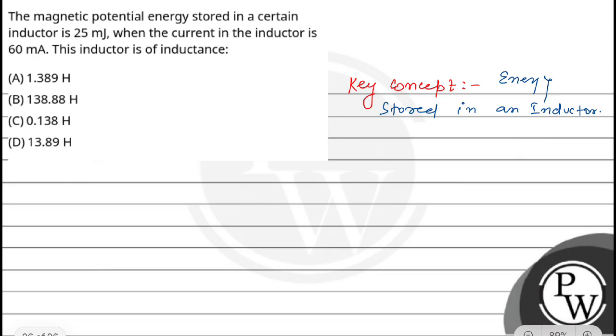We know energy is stored in a magnetic field and potential energy is stored in an inductor. The potential energy U equals 1/2 L I². We have given that U is